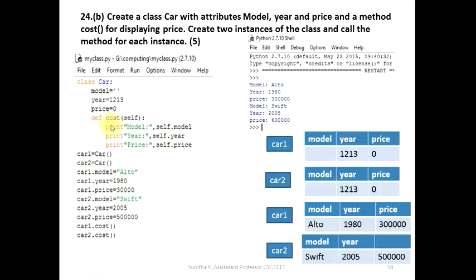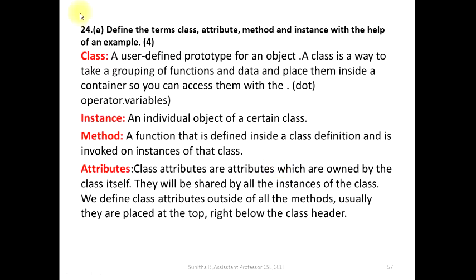Attributes: the class can use the variables — data, memory locations, where data is stored. That is the attributes. Attributes are model, year, and price. Method: cost. Class means it is a user-defined prototype for an object. A class is a way to take a grouping of functions and data and place them inside a container.